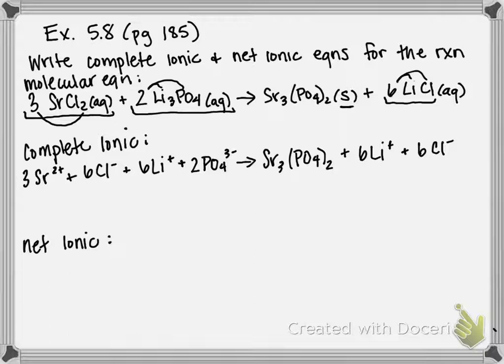So now I have my complete ion equation written out. The next thing I'm going to do is to look at what ions are the same on both sides of the equation. Which of these exist both on the reactant side and the product side. And ions that exist on both sides of the equation are called spectator ions. It means they're present in the reaction mixture, but they're not directly participating in the reaction.